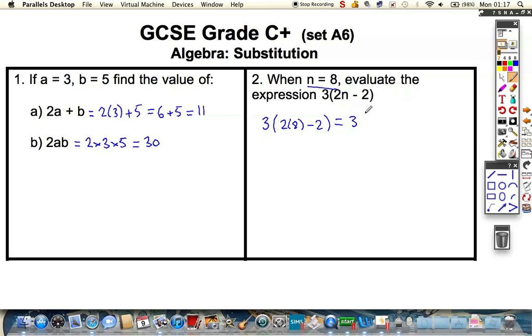So, if we break it down step by step, we've got 3 lots of 2 lots of 8 is 16 minus 2, which we could say is 3 lots of 14, doing 16 minus 2, and we know that is 42.